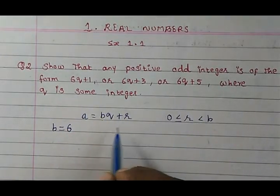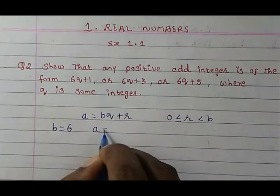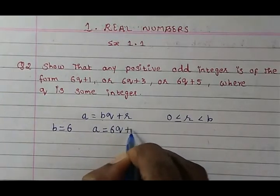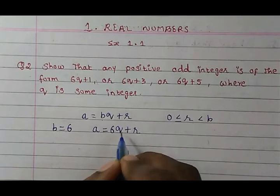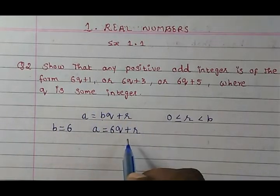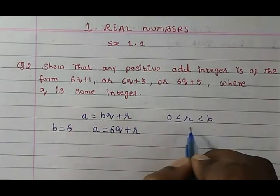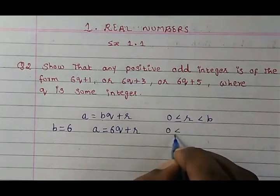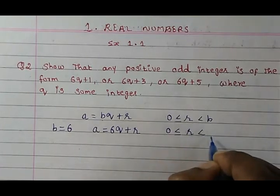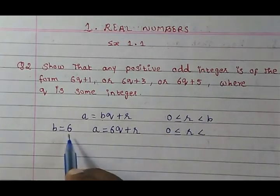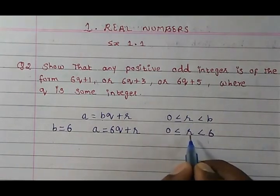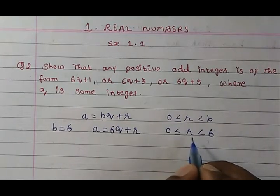Now the same thing can we rewrite it again? a = 6q + r where q can be any integer. Now look at here. The remainder has to be less than the divisor. So let's write it down. Remainder has to be less than the divisor. And what is the divisor here? 6. So remainder has to be less than 6.